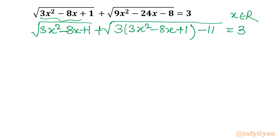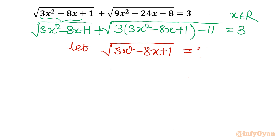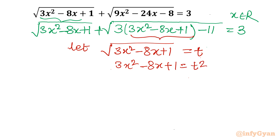Now, substitution. What substitution should we give to this equation so that solving it would be easier? I will set the first complete square root expression equal to some variable t. So let t equal square root of (3x² - 8x + 1). Then squaring both sides gives 3x² - 8x + 1 = t², and I will replace that square root with t in the equation.